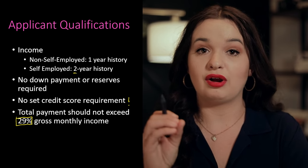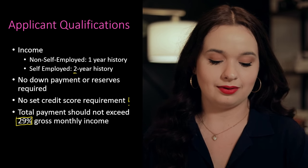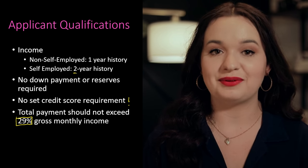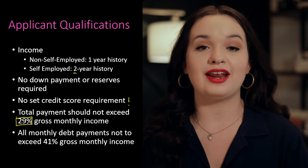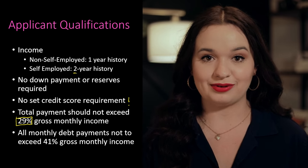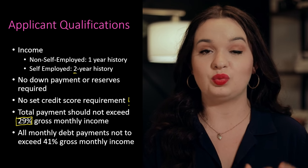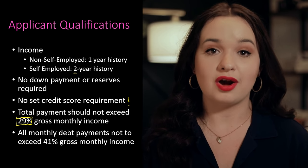In addition to your payment not exceeding more than 29% of your gross monthly income, they are also going to look at your debt-to-income ratio. If you're not familiar with your debt-to-income ratio, I've made a full video explaining what it is and how to calculate it — I will link that for your reference. Lenders, when approving buyers for the USDA Rural Development Loan, want your debt-to-income ratio to be no more than 41%. So those are the requirements they are going to be looking for in your file when determining if you would be a good candidate for this loan.